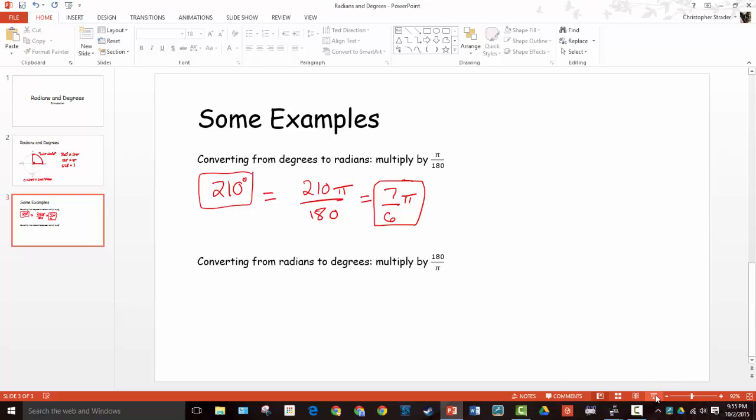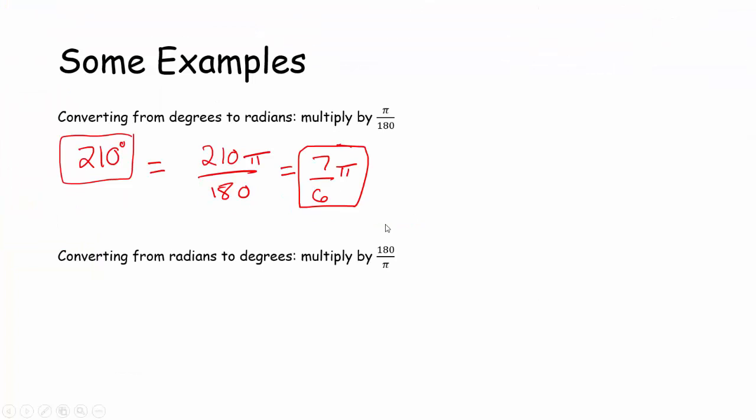So it's nice to think in terms of π, because a lot of questions you're asked to think about what the measurement of the angle would be in radians in terms of π, but it's also nice to be able to compute decimal approximations and make approximations and whatnot.